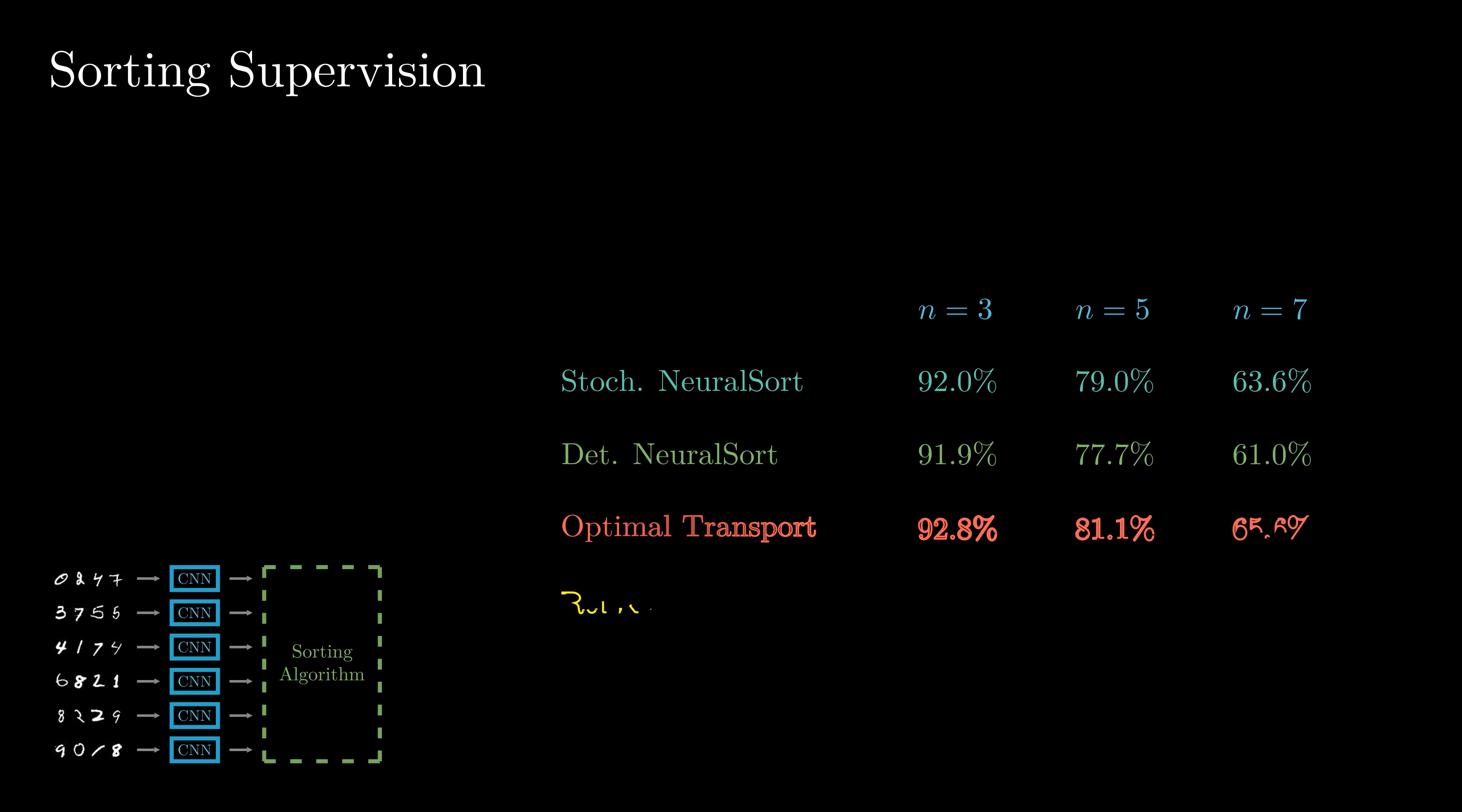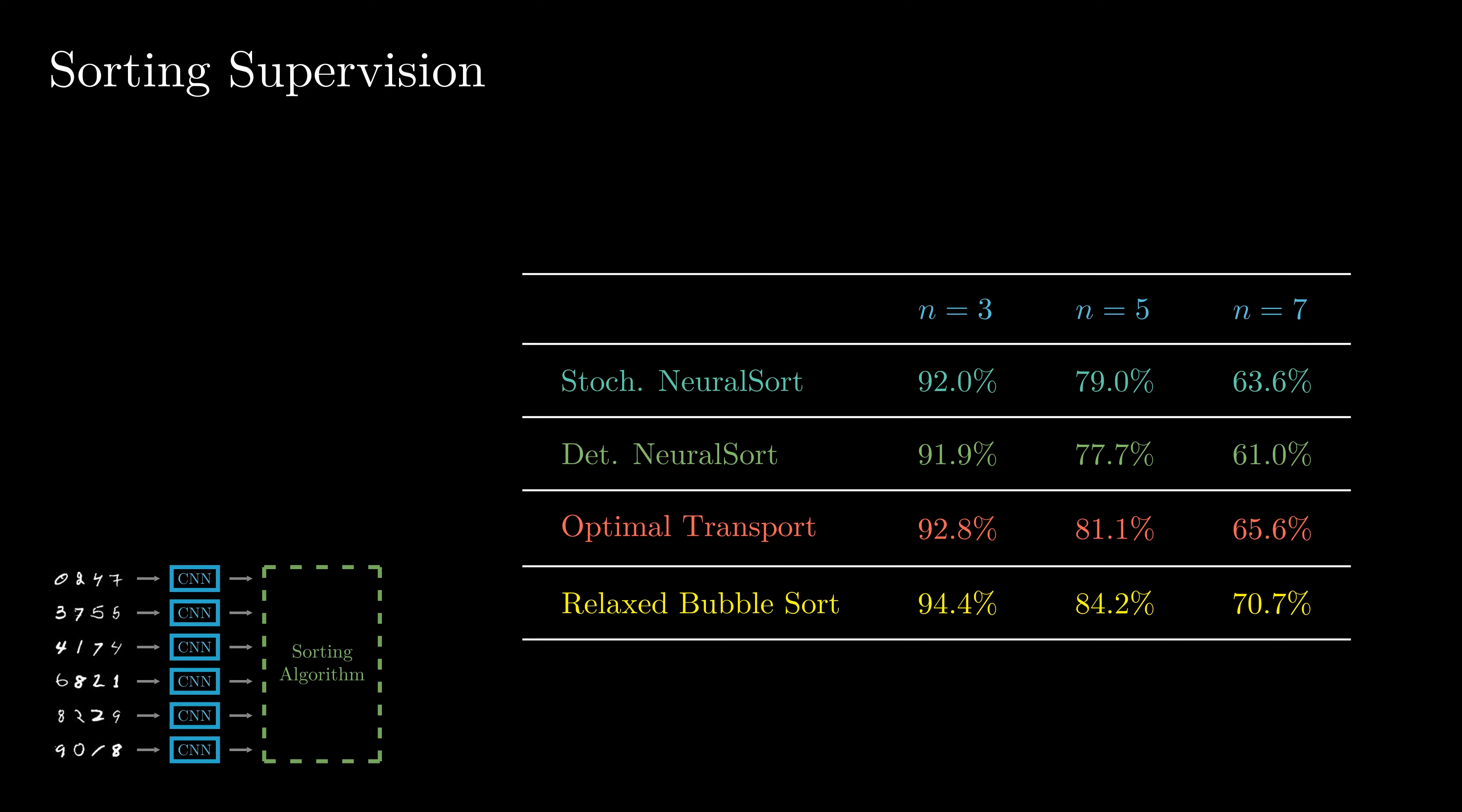As for the results, we achieve competitive performance in comparison to existing differentiable sorting algorithms, as can be seen in the table. The metric here is the fraction of sets of N elements where the CNN produced the correct ranking, that is, the cases where the order among N elements was preserved.